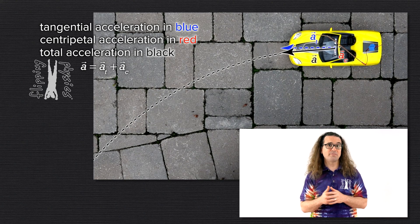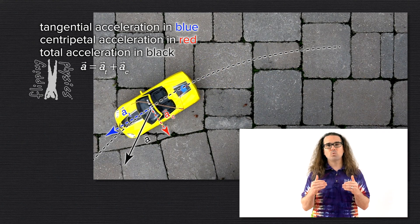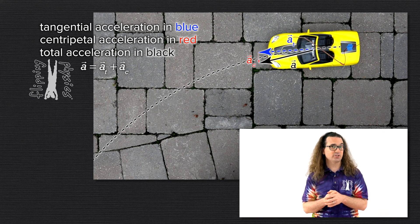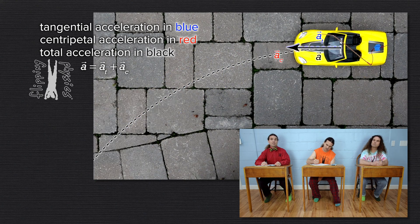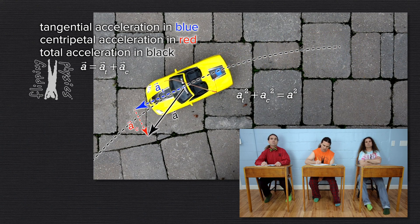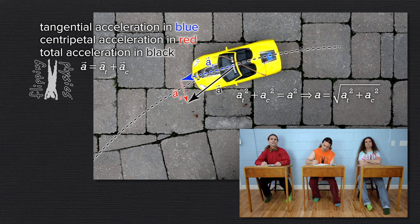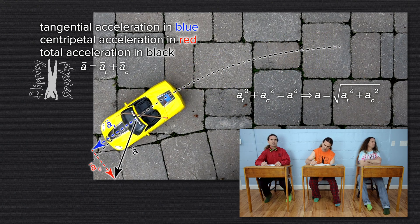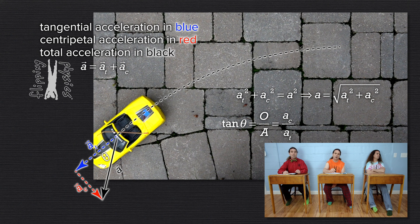Billy, if we knew the value of the tangential and centripetal accelerations of this car at a particular location, please tell me how we would determine the magnitude and direction of the car's acceleration. To find the magnitude of the acceleration of the car, we would use the Pythagorean theorem: tangential acceleration squared plus centripetal acceleration squared equals acceleration squared — so the magnitude equals the square root of the quantity tangential acceleration squared plus centripetal acceleration squared. To find the direction, define theta as the angle between the tangential acceleration and acceleration. Tangent of theta equals opposite over adjacent, or centripetal acceleration over tangential acceleration. Therefore, theta equals the inverse tangent of centripetal acceleration over tangential acceleration.